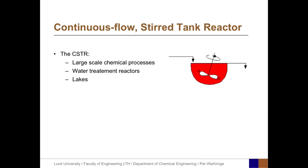Let's start with a picture of the Continuous Flow Stirred Tank Reactor, with its impeller and the input flow and the output flow. The CSTR is very common in large-scale chemical processes, where there is an economic advantage to have continuous production. It's widely used as water treatment reactors, and we can also make an analogy between the CSTR and a well-mixed lake. The CSTR is open with respect to matter and, sometimes also, energy.